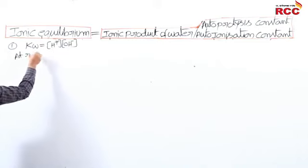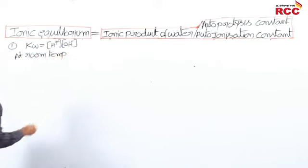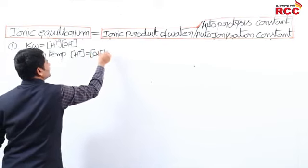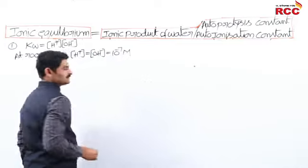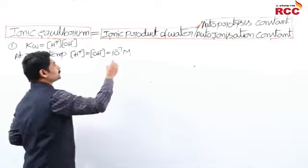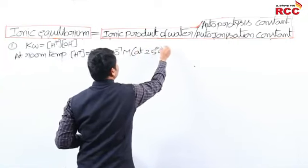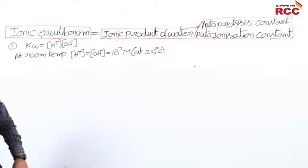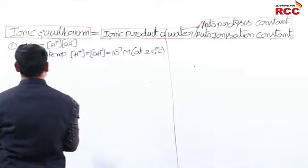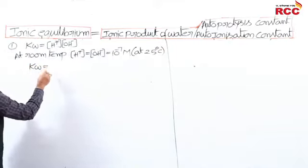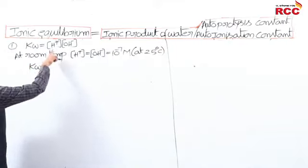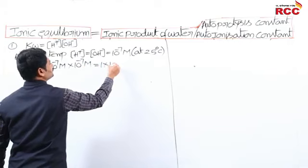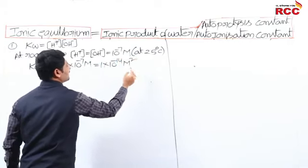At room temperature (25°C), the concentration of H⁺ ions and the concentration of OH⁻ ions are both fixed at 1×10⁻⁷ mol/L. Therefore, Kw = [H⁺][OH⁻] = 1×10⁻⁷ × 1×10⁻⁷ = 1×10⁻¹⁴ mol²/L².